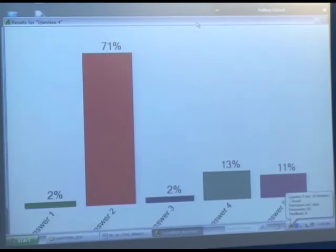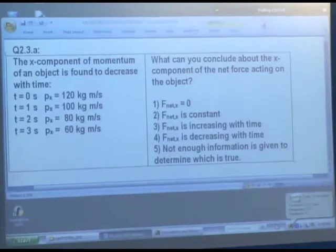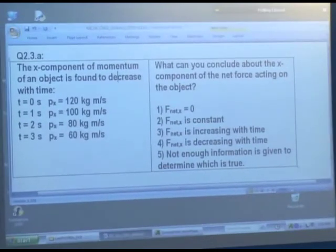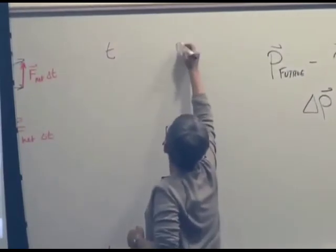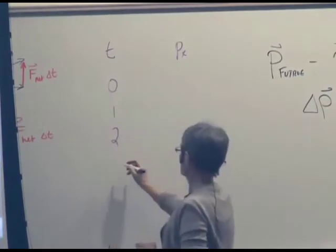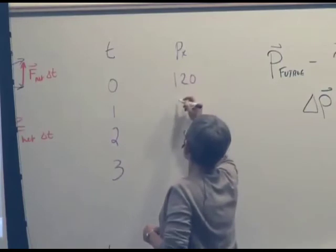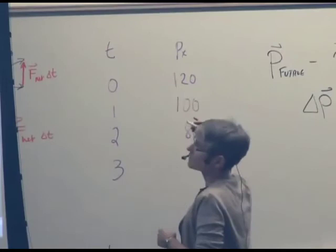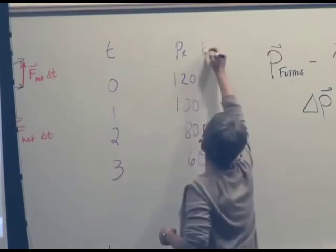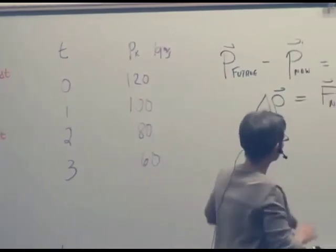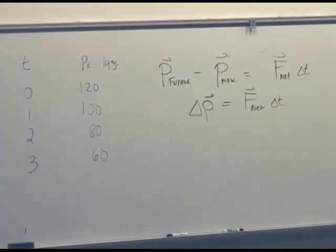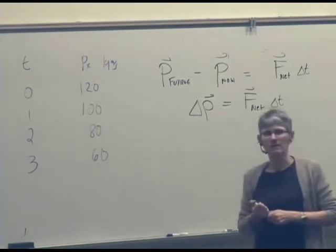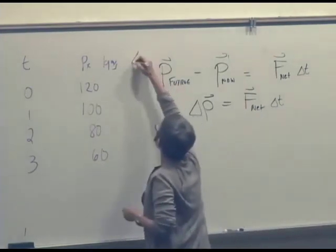So not unanimous. Most people say two, but there's a minority for four and five. So let's see what we can tell here. So we have time and P_x. So we have zero, one, two, three, 120, 100, 80, 60 kilogram meters per second. So the easy way to think about it is to use this form of the equation. The change in momentum is equal to the net impulse during some time interval Δt. So let's actually make another column here, ΔP_x.